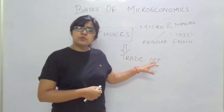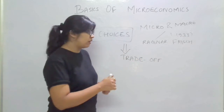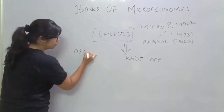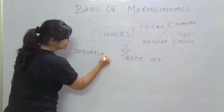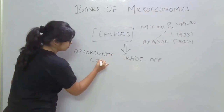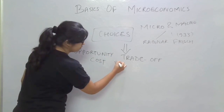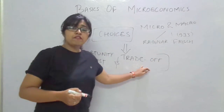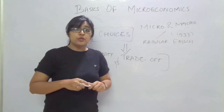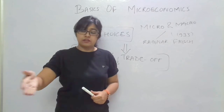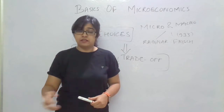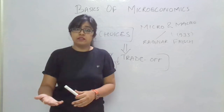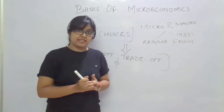Students often get confused between two terms: trade-off and opportunity cost. Trade-off is simply that you are choosing between one good or another, one situation and another. You are just choosing, and this choice of one thing over another is basically the trade-off.